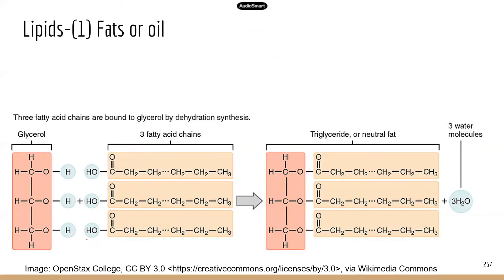Let's look at fats or oils first. Lipids are not strictly polymers because they do not have a repeated subunit. Looking at the structure, this is triglyceride — the most common type of fat. The structure has two components. The first one is glycerol, which has just carbon, hydrogen, and oxygen elements. In the ATIT study manual, glycerol is listed as a type of carbohydrate, but I actually think of glycerol as a type of alcohol, because you can see a carbon backbone connected with hydroxyl groups.